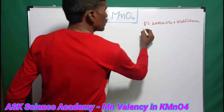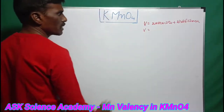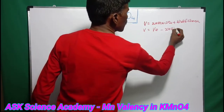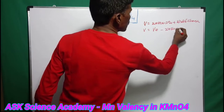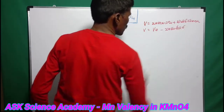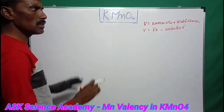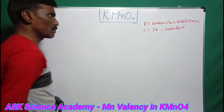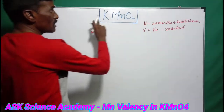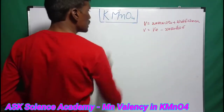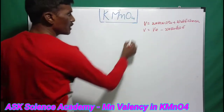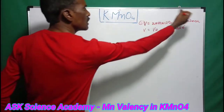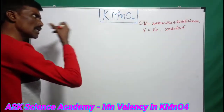Using this first formula, valency equals the number of bonds plus formal charge. To find the manganese valency, we look at the formal charge first, using the formula: formal charge equals valence electrons minus non-bonded electrons minus bonded electrons divided by 2.